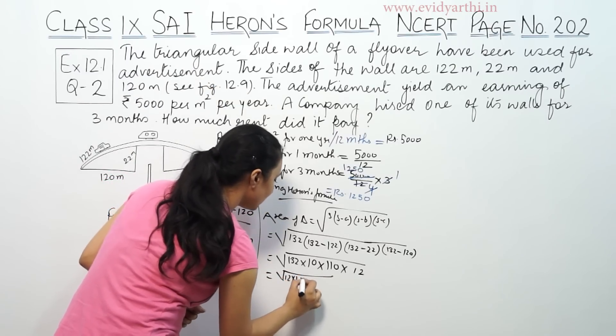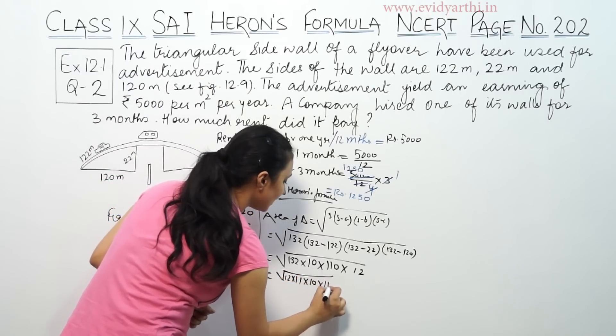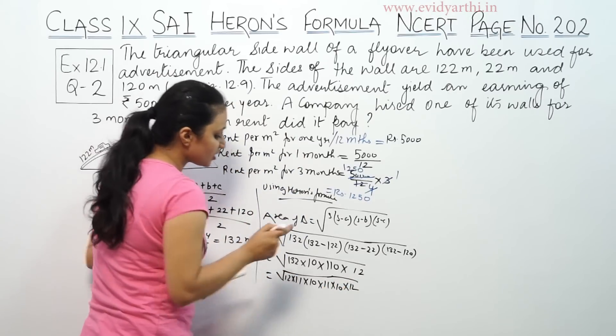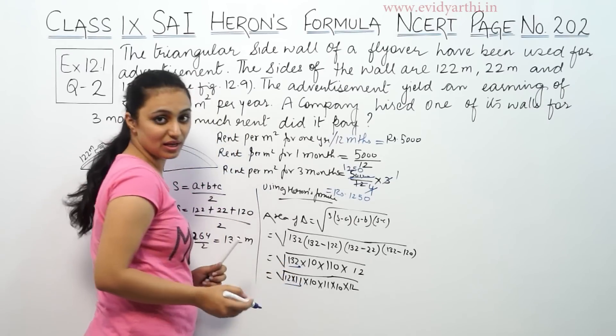Now we simplify. 132 is 12 into 11. Then 110 can be broken into 10 into 11. We can take out 11.